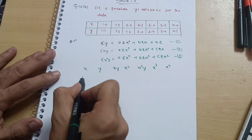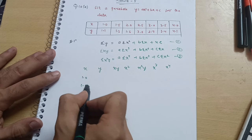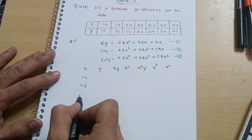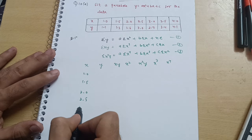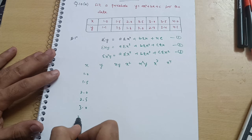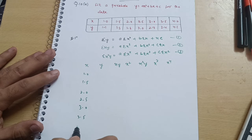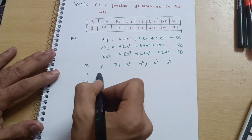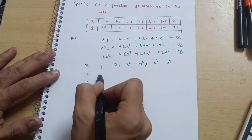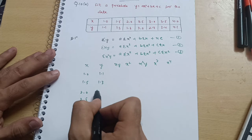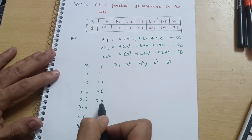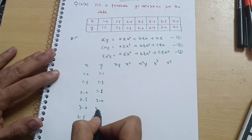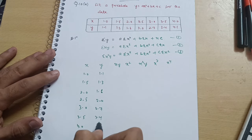The x values given are: 1.0, 1.5, 2.0, 2.5, 3.0, 3.5, 4.0. The y values given are: 1.1, 1.3, 1.6, 2.0, 2.7, 3.4, 4.1.